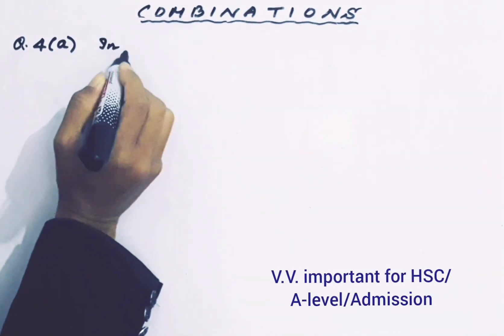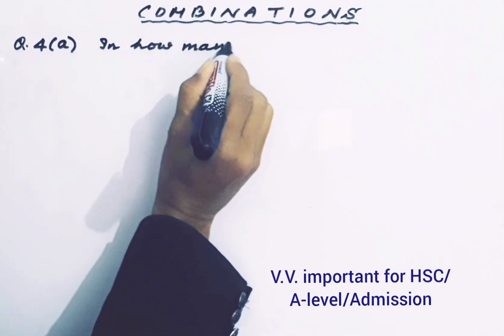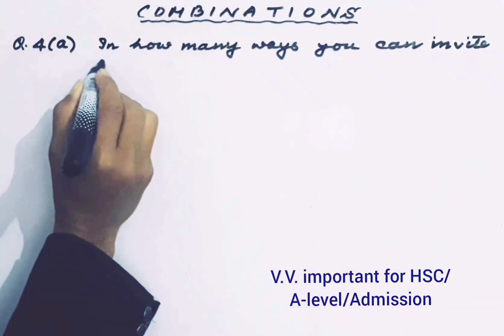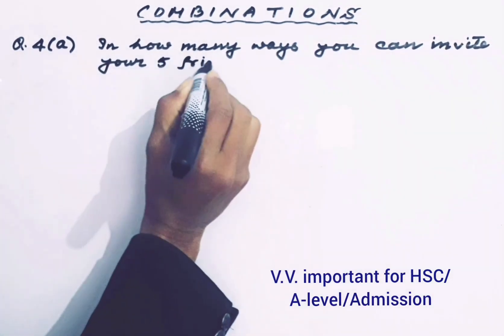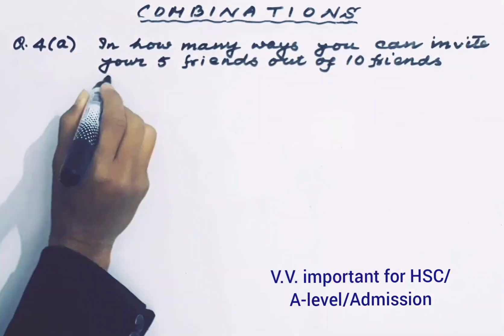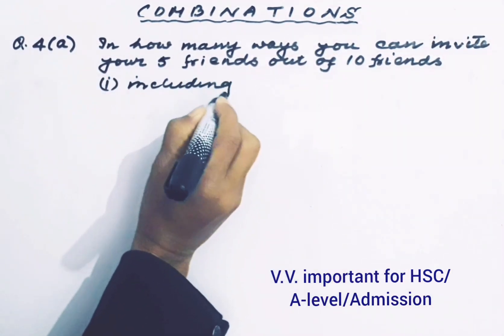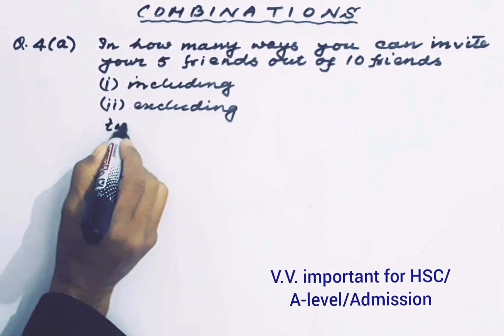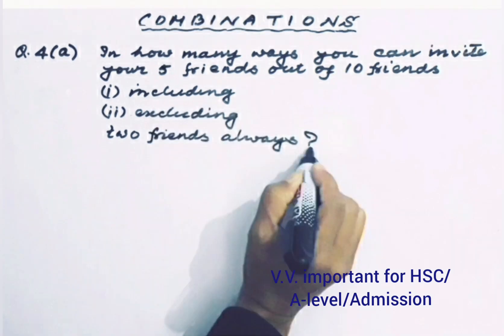Combination. In how many ways can you invite your 5 friends out of 10 friends? Question 1: Including two specific friends always. Question 2: Excluding two specific friends always.